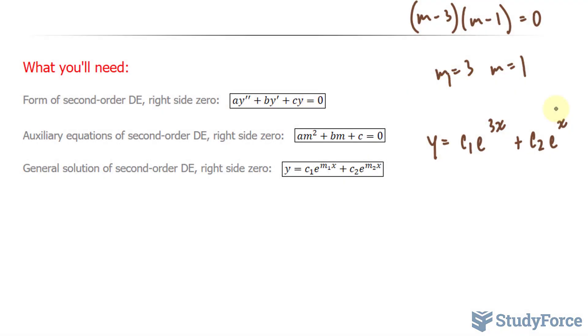So now we have our general solution, and we're told that y prime at the point (1, 2) is equal to 5. So how do we find y prime given that we just found this general solution? Well you can take its derivative, let's go ahead and do that.